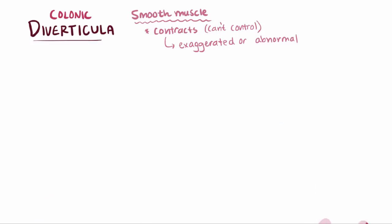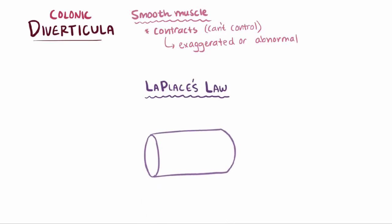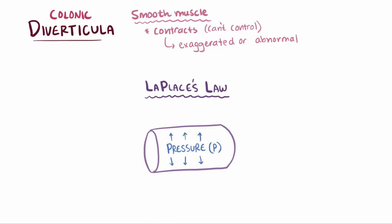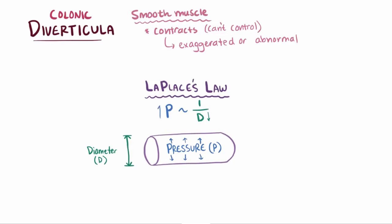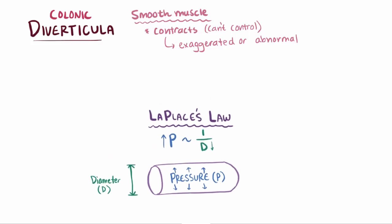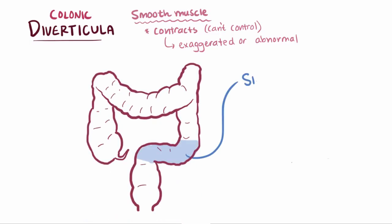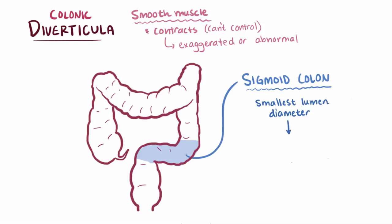Let's consider Laplace's law, which says that the pressure on the wall of a cylinder is proportional to the inverse of its diameter. So as diameter decreases, pressure increases. In other words, a really small cylinder is going to feel a lot more pressure on its walls than a really large cylinder. Similarly, since the sigmoid colon is the smallest portion of the colon in diameter, it's subject to relatively high pressures according to Laplace's law — basically the spot in the large intestine where the walls get pushed on the hardest.